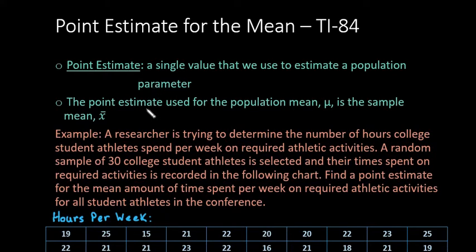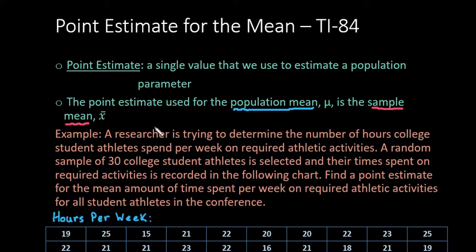In order to find the point estimate for a population mean, all you have to do is find the sample mean. So after you've found your sample — going back to the black bears — you could look at those 20 black bears and see how much they traveled over the given year. Let's look at an example.